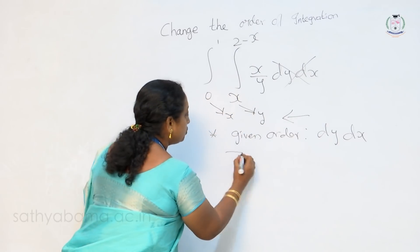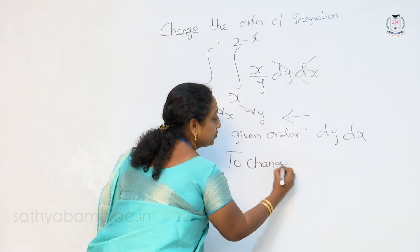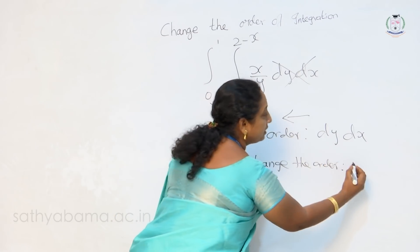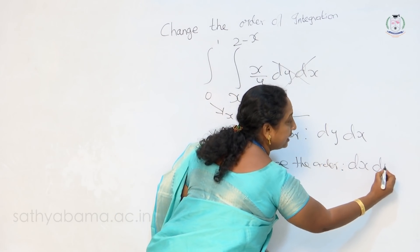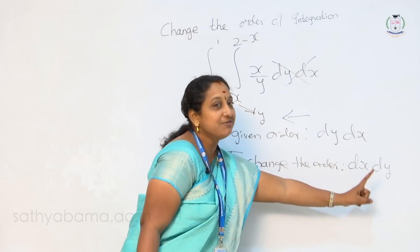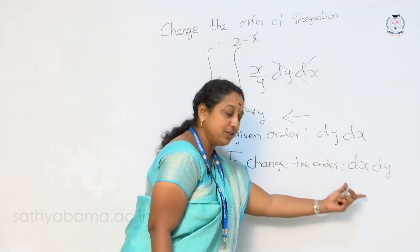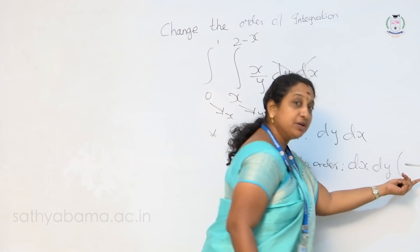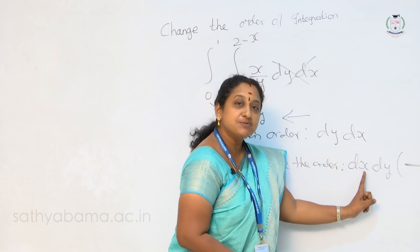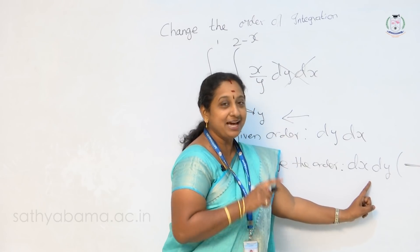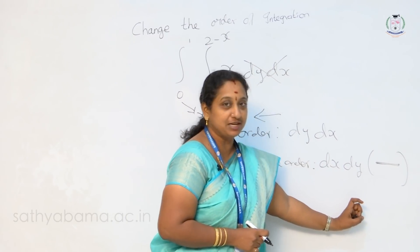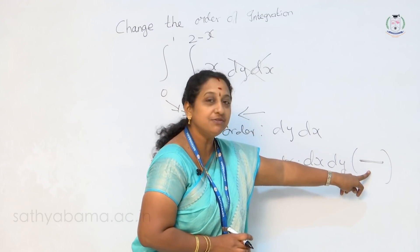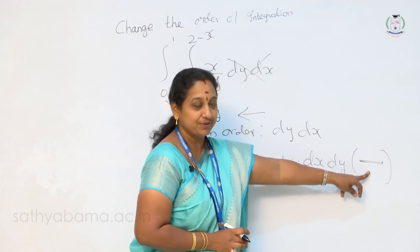To change the order of integration, we have to reverse it — that is, first integrate with respect to x and then with respect to y. So we identify the order. According to that, we have to consider a strip. If we integrate with respect to x, we have to consider a horizontal strip. If we integrate with respect to y, we have to consider a vertical strip. So we are considering a horizontal strip.